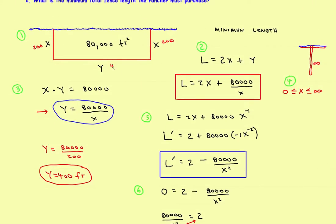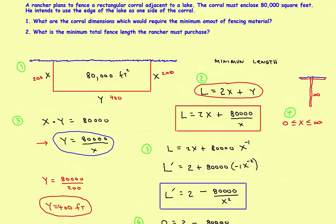Now for the second part of the question: what is the total minimum length of fencing to buy? Plugging back into L equals 2X plus Y: L equals 2 times 200 plus 400 equals 400 plus 400 equals 800 feet. So 800 feet is the minimum amount of fencing the rancher needs to enclose 80,000 square feet.